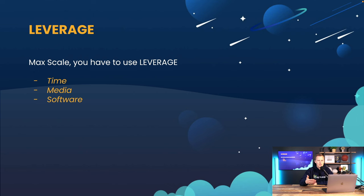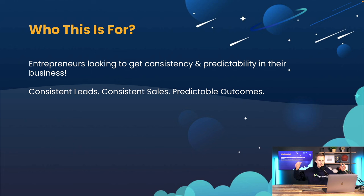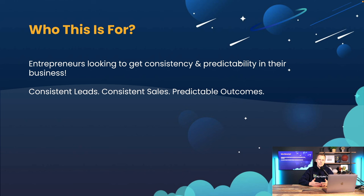Who is this training for? Any entrepreneur — you don't have to just be a marketing agency owner. Anyone looking to start their own software business or GoHighLevel business, entrepreneurs looking to get consistency and predictability. I think that should be almost every entrepreneur out there. If you want to make $100K for the first time in 2024, let's not just put out some hopes and dreams — let's reverse engineer the things we need to do. It's the inputs we do on a consistent daily basis that give us the outputs we're looking for.